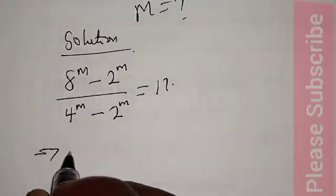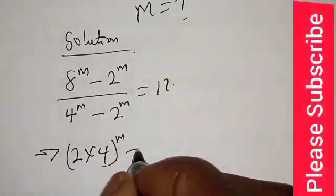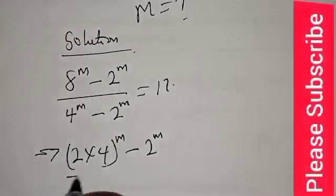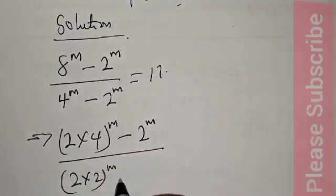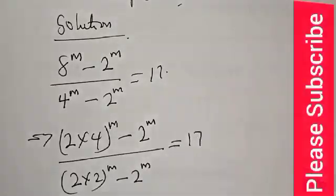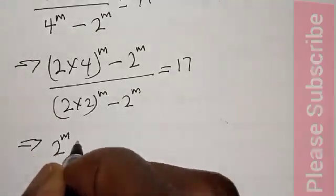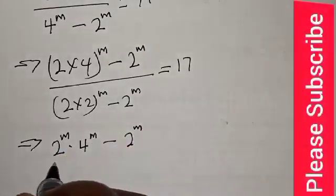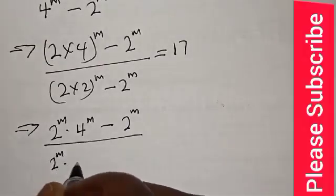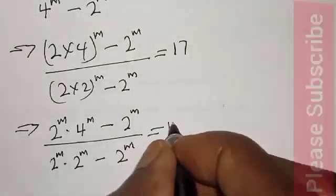This implies that 8 raised to power m can be expressed as 2 times 4 raised to power m minus 2 raised to power m, over 2 times 2 raised to power m minus 2 raised to power m, equal to 17. This implies that 2 raised to power m minus 2 raised to power m, equal to 17.